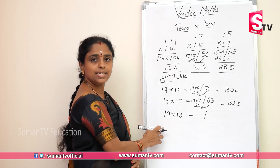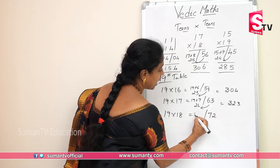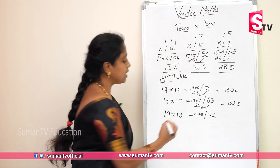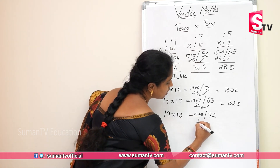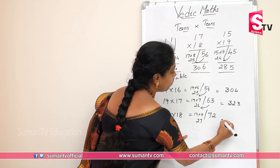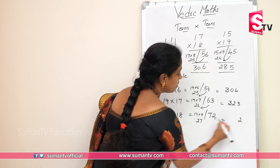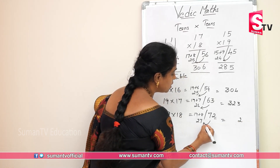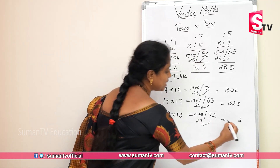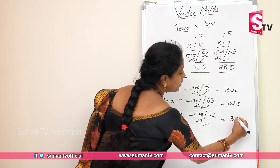19 into 18. 8 nines are 72. 19 plus 8 — what do you get? 27. Now write this 2 here, carry over this 7. 27 plus 7 is 34. So 19 into 18 is 342.